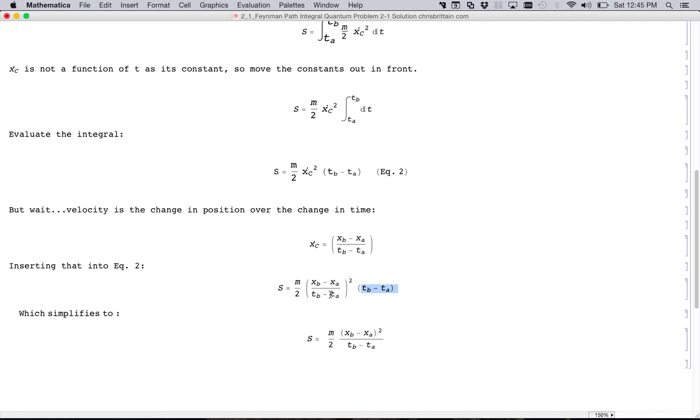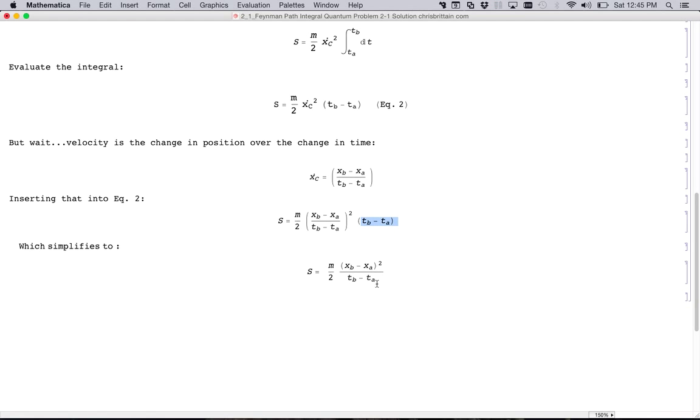It cancels with one of the denominators. The top numerator stays squared. So the action becomes that. That's what he was looking for at the end.